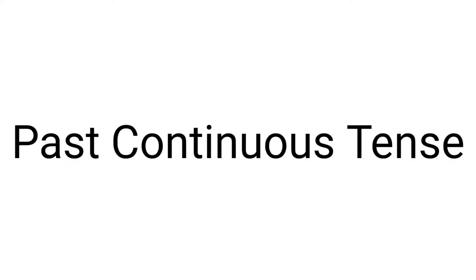The past continuous tense, also known as the past progressive tense, refers to a continuing action or state that was happening at some point in the past. It is formed by the past tense of 'to be' with the verb's present participle. Hi everyone, welcome to my channel. In this video, we will study the structure and use of the past continuous tense.